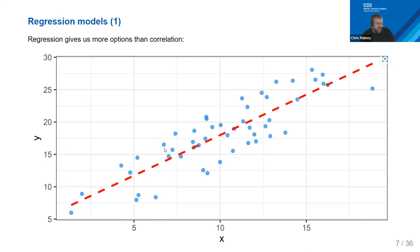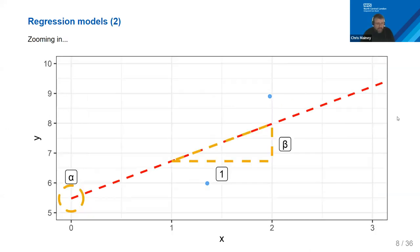Very few of the data points are actually on that line, but we're trying to use the average relationship. This can be explained with the equation of a straight line. The things you need to work out: where does the line start — when X is zero, what is Y? We call that the intercept.